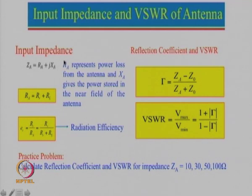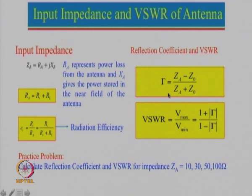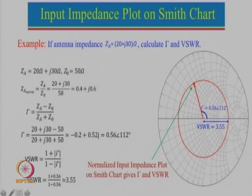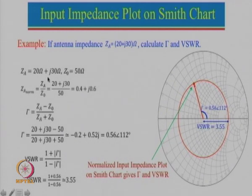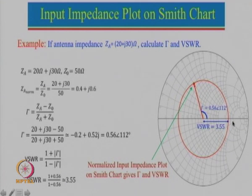Then we looked at input impedance. Input impedance can be a complex quantity with a real part as well as an imaginary part. From there we looked at how we can calculate a reflection coefficient, which tells us what is the reflected power. From the reflection coefficient we can also define VSWR. Since impedance is a complex number, we should use the Smith chart, which is a graphical representation of complex impedance and makes life much easier for finding VSWR, reflection coefficient, and its angle.